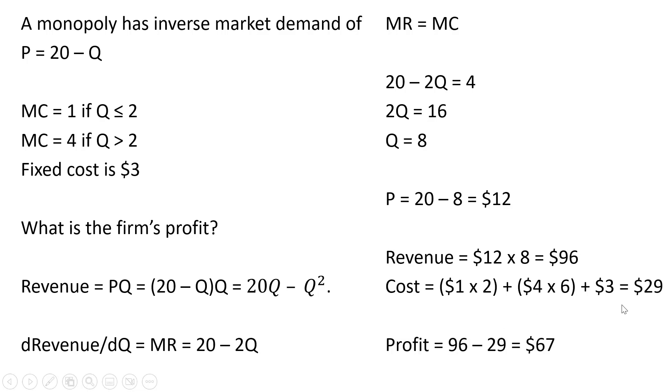To get profit, 96 minus 29, we get $67 of profit.